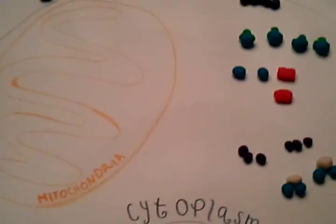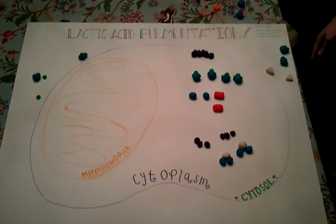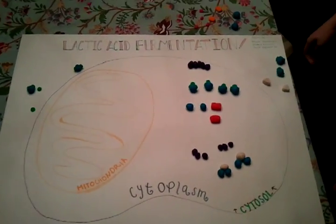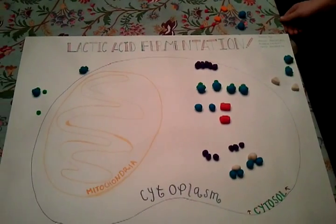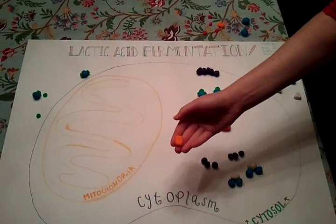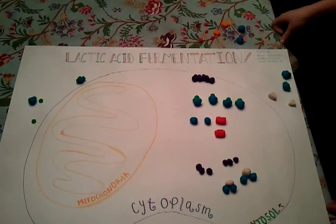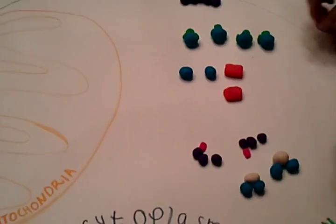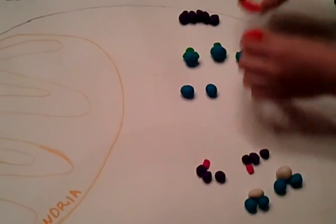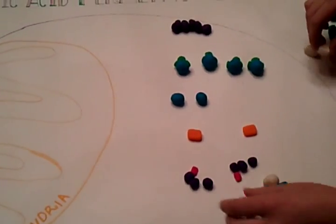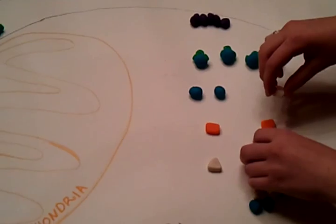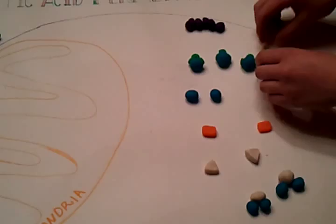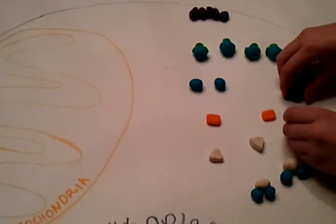Now we will explain fermentation, the process by which glycolysis may be continued. In fermentation, there are no oxygen or electron transport chains used. Fermentation expands glycolysis by regenerating the NAD+, and this regeneration happens when electrons are transferred from NADH to pyruvate, thus reducing the NADH to NAD+ and forming lactate. Two ATP are produced by substrate level phosphorylation in this step as well.